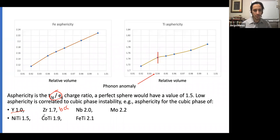For the materials we talked about: nickel titanium, cobalt titanium, and iron titanium. Nickel titanium is the shape memory alloy with phase transition around 340 Kelvin. Cobalt titanium will be around 40, and iron titanium is always stable. We can see that as the asphericity decreases in this series, the cubic structure becomes more and more unstable.